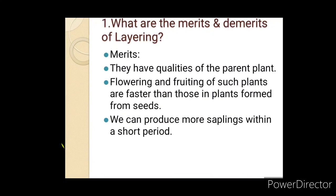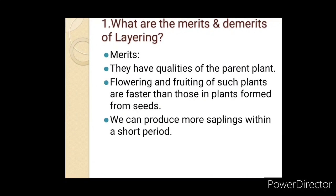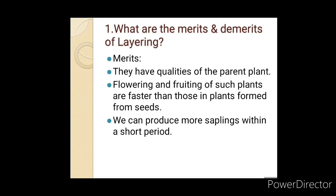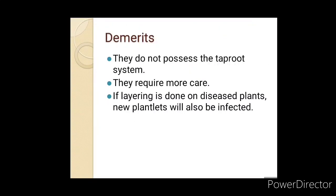What are the merits and demerits of layering? They have the qualities of the parent plants. We can produce more saplings. Saplings are the ones that we have to distribute. The demerits are that they do not possess the tap root system.